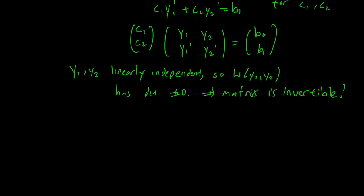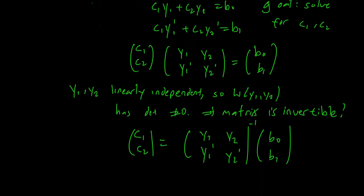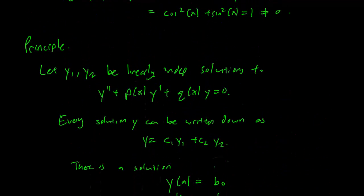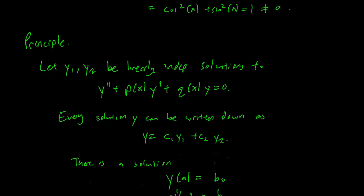So in the end what we have here then is that we have our values for c1 and c2 using the inverse. And this means that we have a y1 and y2 that satisfies this criteria. So we can express this solution in terms of y1's and y2's. And hence we have shown that this principle of superposition must be true.